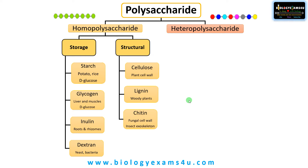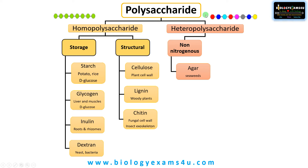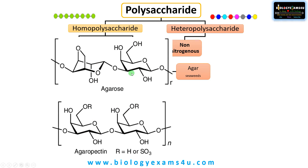Now let us discuss heteropolysaccharides, which are made up of different types of monosaccharide units, and can be classified into non-nitrogenous and nitrogenous types. The first non-nitrogenous heteropolysaccharide is agar, obtained from red algae or seaweeds of the genus Gracilaria and Gelidium. It is made up of agarose, a neutral linear polymer mostly of galactose that gives gelling ability, and agaropectin, a sulfated charged polymer that is highly branched with galactose and other sugars, stabilizing the agarose gel. Agar is widely used in food, cosmetic industries, plant tissue culture media, and bacterial culture media.